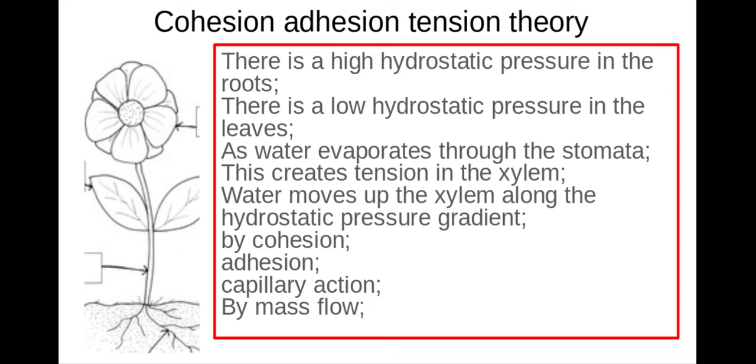Now the reason that water moves up in a continuous column, again continuous column is another marking point, is because we have cohesion which is hydrogen bonding between water. We have adhesion which is where the water is attracted to the xylem walls and we also have capillary action which is the natural movement of water up a narrow tube which is what the xylem is. It's a hollow tube which is very narrow so I get a lot of capillary action as well.